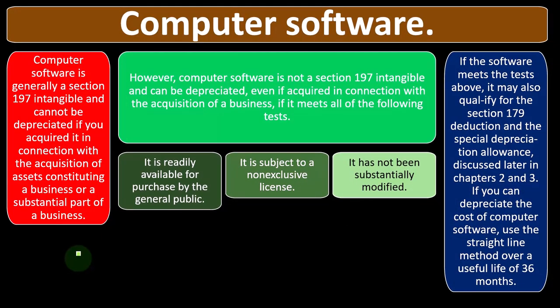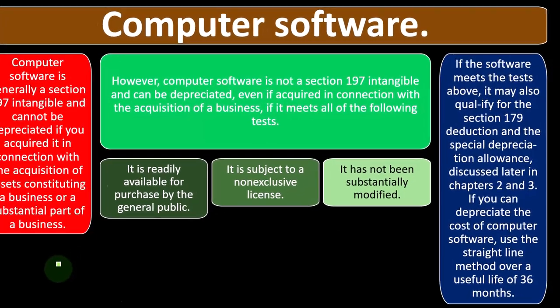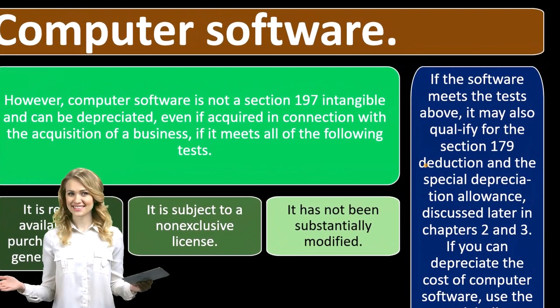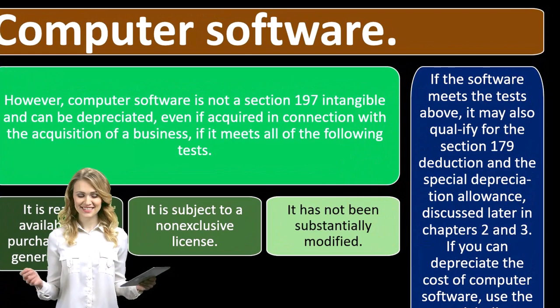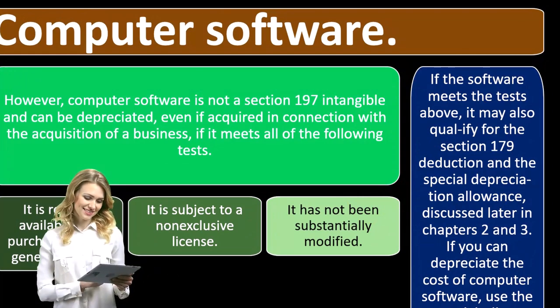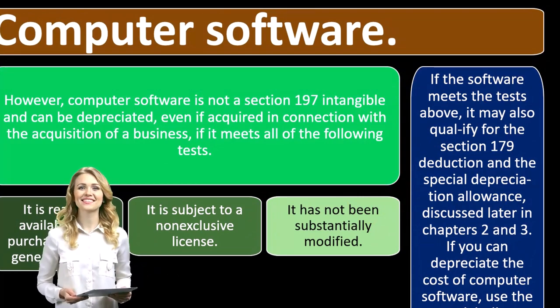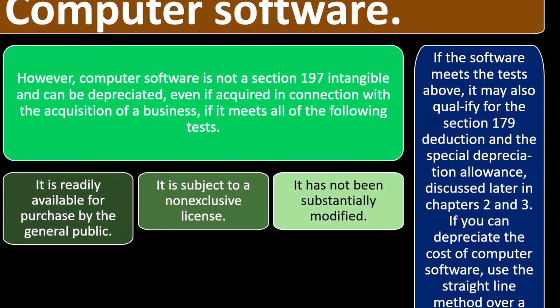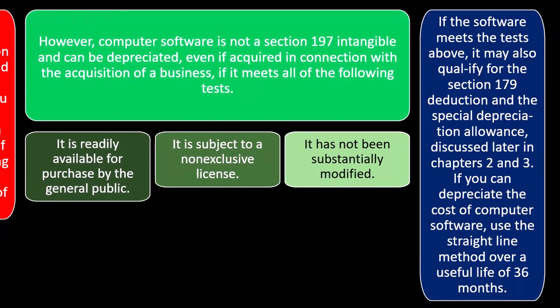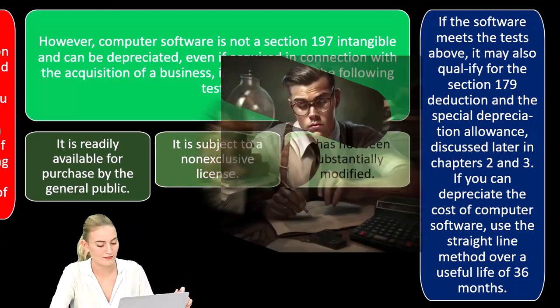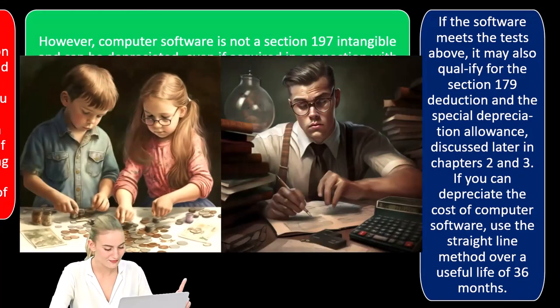If the software meets the tests above, it may also qualify for the Section 179 deduction, which is an accelerated type of deduction we'll talk about later, and the special depreciation allowance, which is another special depreciation deduction allowing you to get more of the deduction up front.